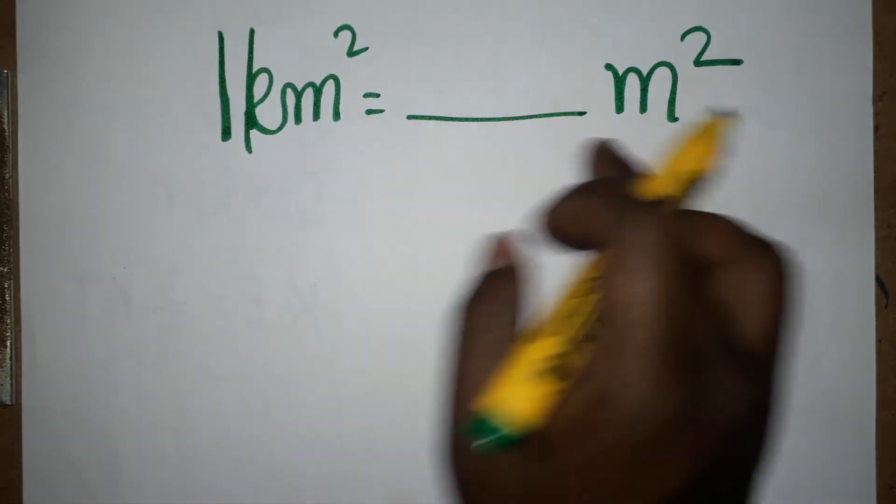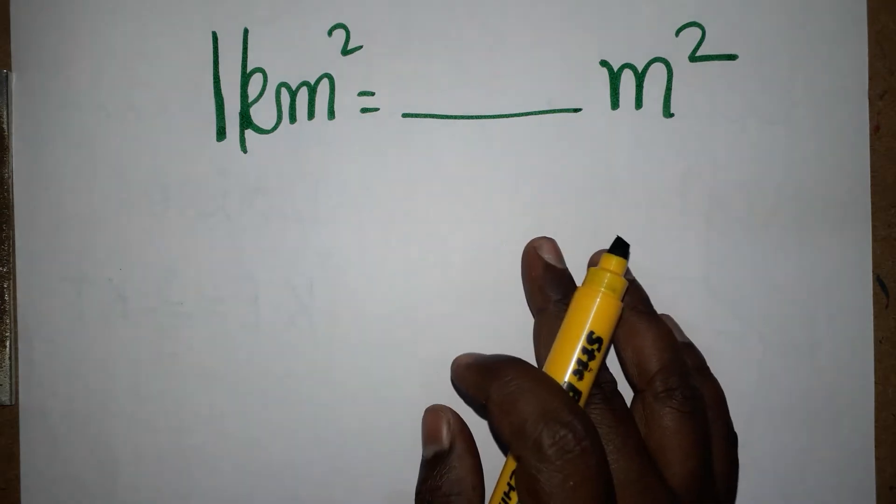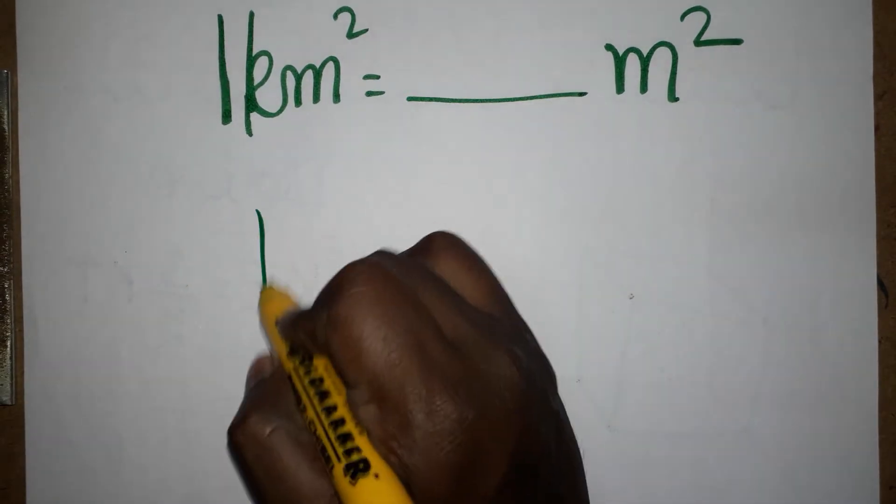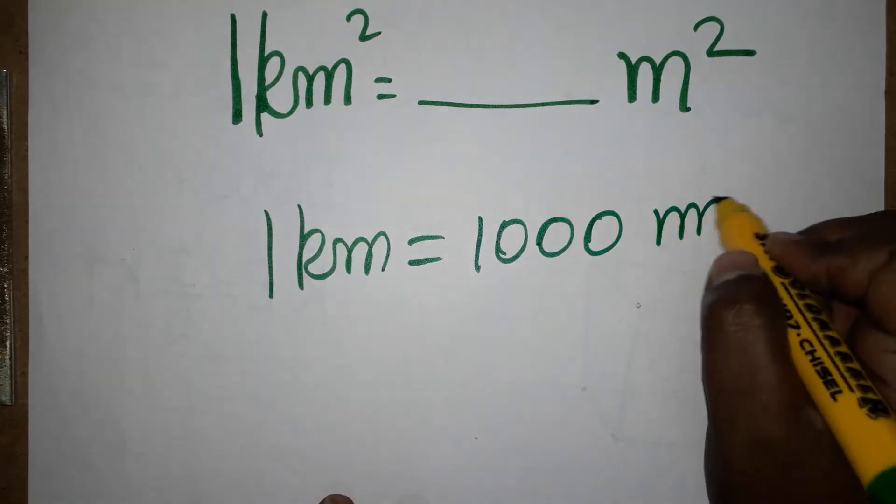Today we are going to learn one kilometer square is equal to dash meter square. We are going to learn how to convert from kilometer square to meter square. One kilometer is thousand meter, very simple. It's thousand meter, thousand.